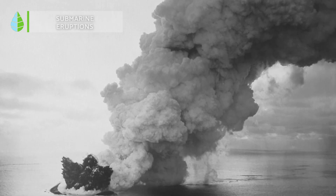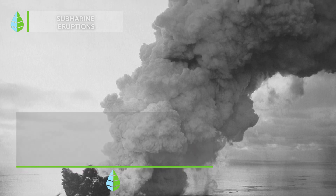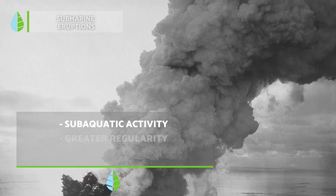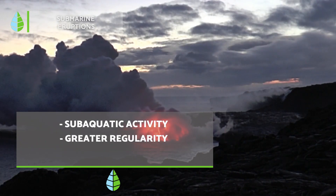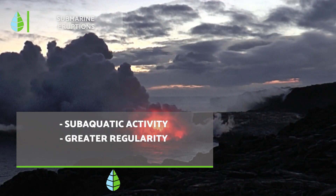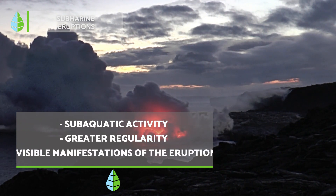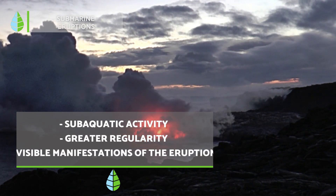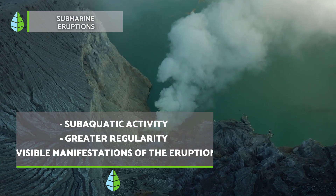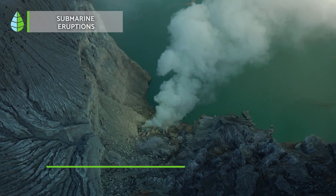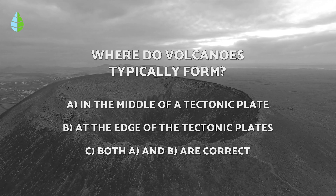Submarine eruptions, though often overlooked, are actually more common than other types. They are named after notable eruptions that occur in Iceland. During these events, a mixture of water vapour and ash rises, but their visibility varies based on the depth of the eruption site and its intensity.